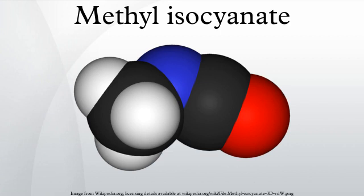Alcohols and phenols, which contain an OH group, react slowly with MIC, but the reaction can be catalyzed by trialkylamines or dialkyltin dicarboxylate. Oximes, hydroxylamines, and enols also react with MIC to form methylcarbamates. Ammonia, primary, and secondary amines rapidly react with MIC to form substituted ureas. Other NH compounds, such as amides and ureas, react much more slowly with MIC.